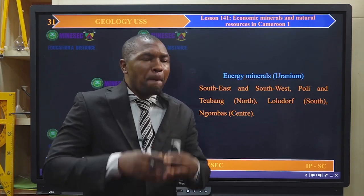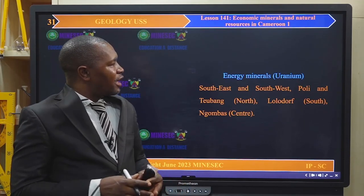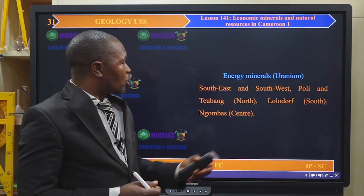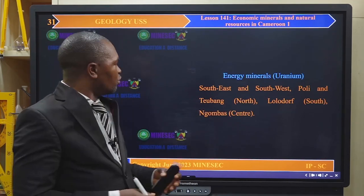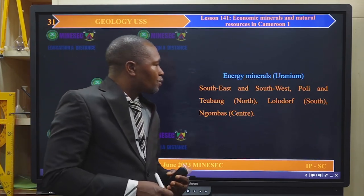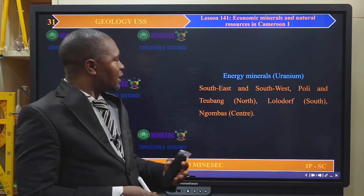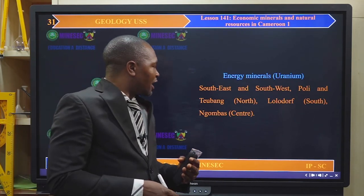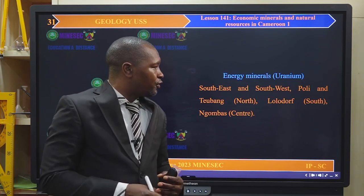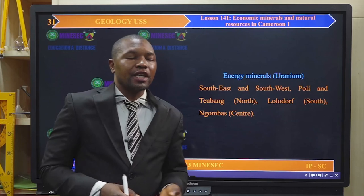Energy minerals — the most common is uranium. Uranium is located at the southeast and southwest portions, at Puli and the Teobank in the north region of Cameroon. We also have Lolodorf in the south region and Ngombas in the center region.